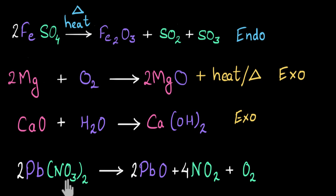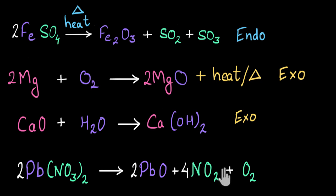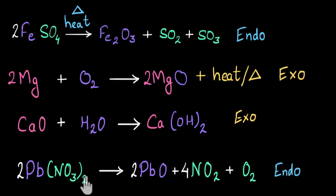In this reaction, lead nitrate is breaking down into lead oxide, nitrogen dioxide, and oxygen. One single reactant — one big molecule — is decomposing into multiple products, so this is a decomposition reaction. In general, decomposition reactions require a lot of heat, so I guess this will also require a lot of heat, making it an endothermic reaction. This is confirmed experimentally: when we heat lead nitrate, we get brown-colored nitrogen dioxide gas, and we had to provide heat — no heat or light is produced — so this is endothermic.